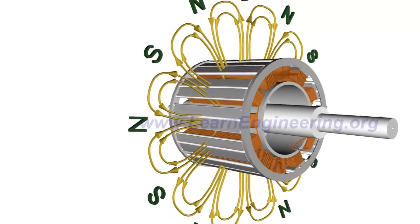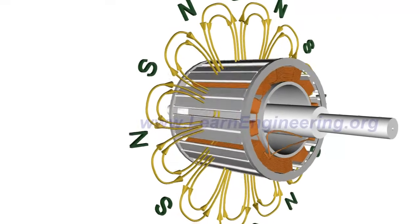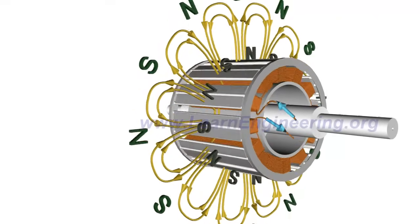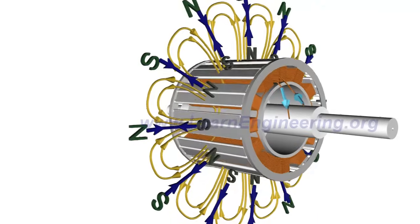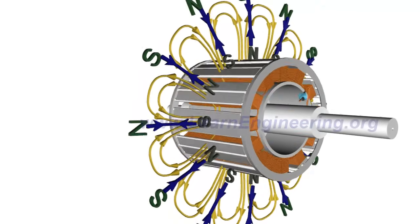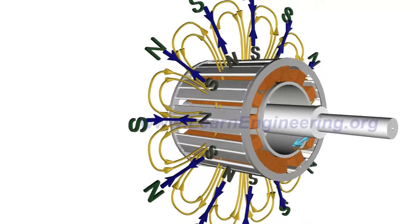When the rotor has achieved its maximum speed, rotor field coils are energized. So as discussed earlier, poles of rotor get locked with poles of RMF and will start rotating at synchronous speed.